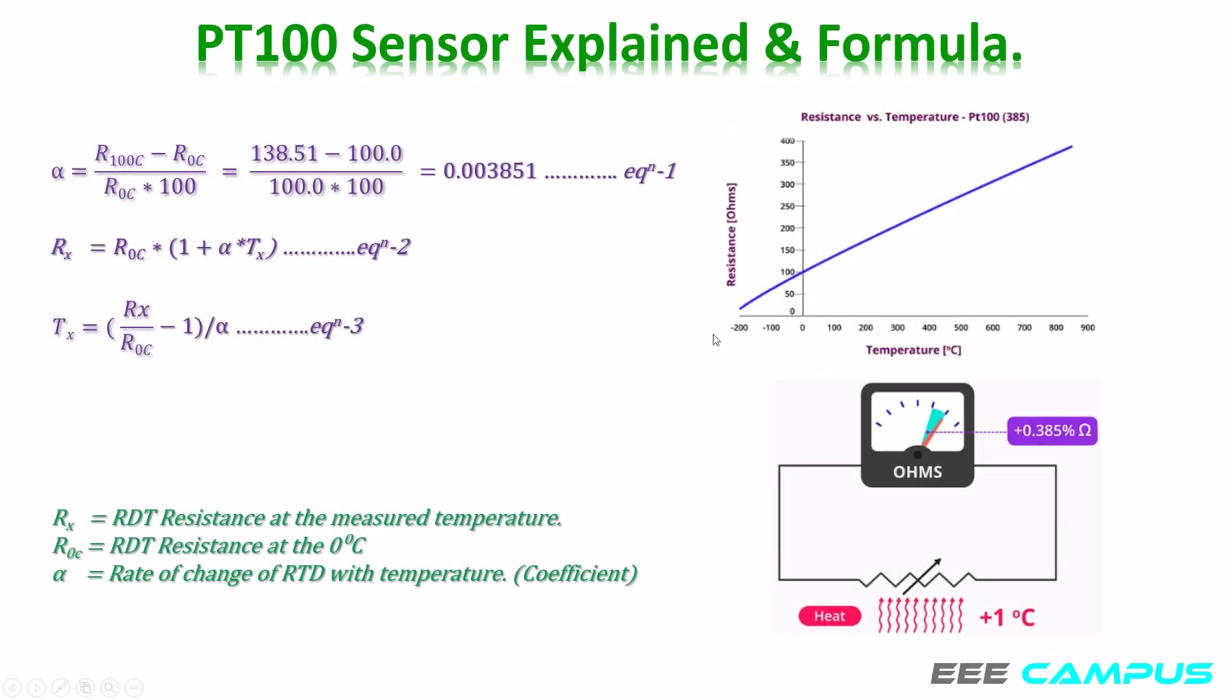First of all, we will understand what is PT100 sensor. Platinum 100 or PT100 is a type of resistance temperature detector or RTD which is used as an important part of various process control systems. PT100 is a type of resistive temperature detector whose resistance changes with temperature and the rate of change of resistance is proportional to the temperature and it's quite linear.